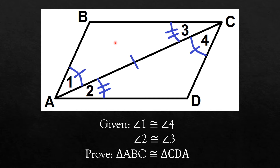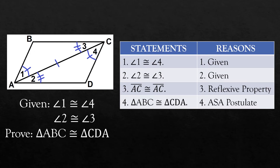The two triangles are congruent by the ASA or angle-side-angle postulate. Now that we already have a plan, we can start constructing the two-column proof. The two-column proof contains the statements and reasons. Your proof should always start with what you were given, although sometimes not all are to be enumerated immediately — sometimes the given may be written one at a time. The first statement is: angle 1 is congruent to angle 4, because it was given.